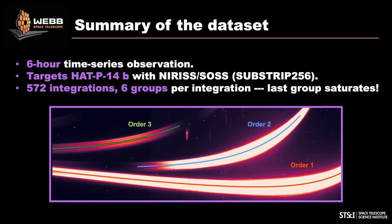For the NIRISS TSOs, at a high level: six-hour time series observation, target was HAT-P-14b with NIRISS SOSS and the substrip 256. These are almost 600 integrations, six-group integrations. The last group actually saturates on this dataset, and this was done by design — we wanted to cover the entire dynamic range of the detector with these observations and see what we could find out.